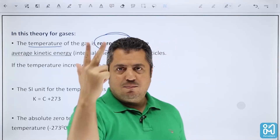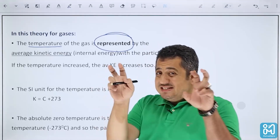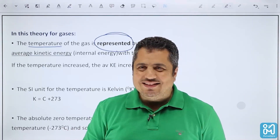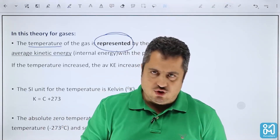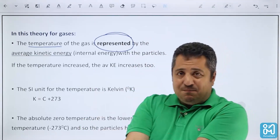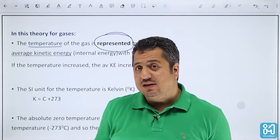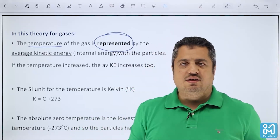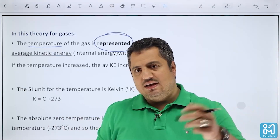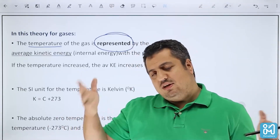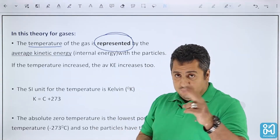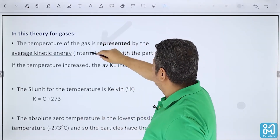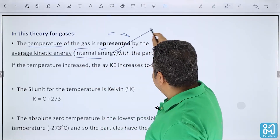The temperature of the gas is represented by — 'represented' means there is a relationship — a direct relationship between temperature and kinetic energy. A temperature of 30 Celsius doesn't mean the kinetic energy is 30 joules; it means increasing the temperature gives kinetic energy to the particles, making them faster. Increasing temperature increases kinetic energy and speed of the particles; decreasing temperature does the opposite.